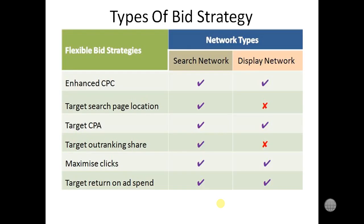We have around six bidding strategies as mentioned, and we have two networks: Display Network and Search Network. Let's check out which bidding strategy is suitable for which network. If we are talking about the first one — Enhanced CPC — it is suitable for both networks: Search Network as well as Display Network.